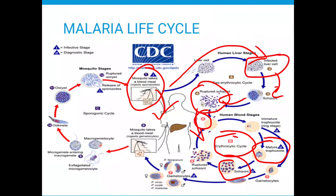The schizonts continue expanding the red blood cell until the membrane gives in and ruptures, releasing what is inside. At stage six, the red blood cell is ruptured and releases the merozoites back into the blood. After several erythrocytic cycles where red blood cells have been attacked and damaged, more merozoites are produced in the blood of the human being.